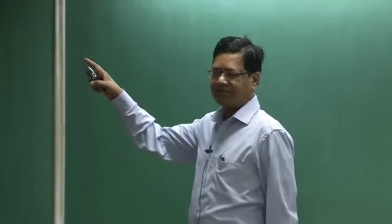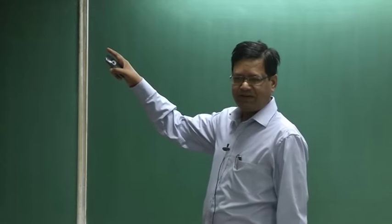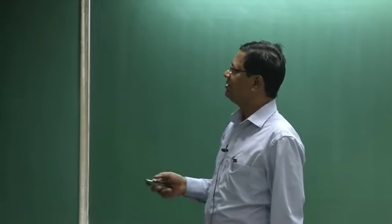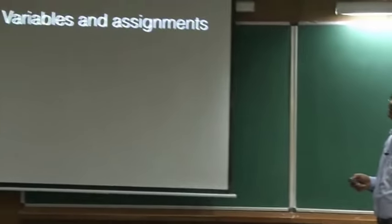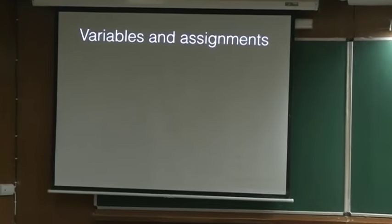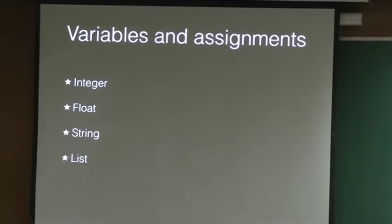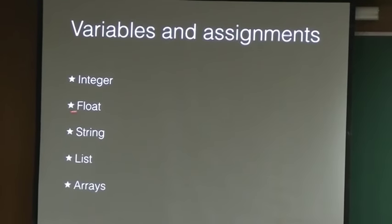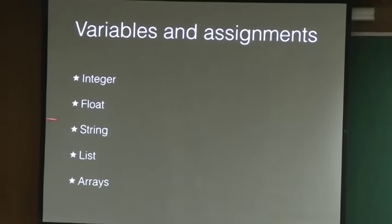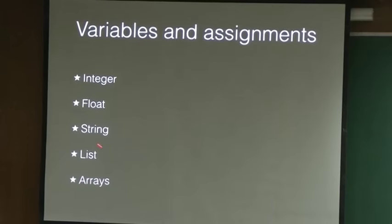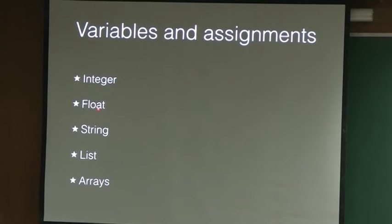I will repeat some of the things which I did last time. Variables and assignment. Python has five types of variables. We will not use much of string and list. We will use integer, float, and arrays.